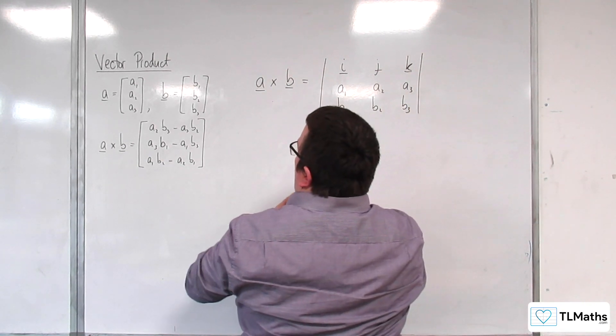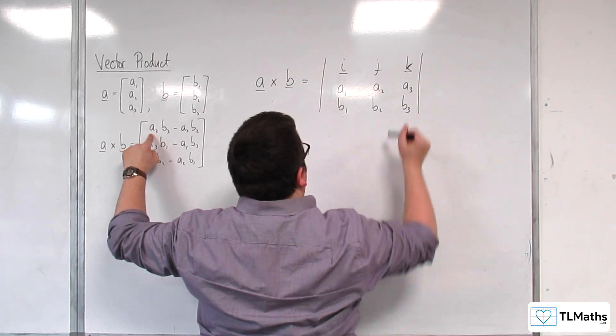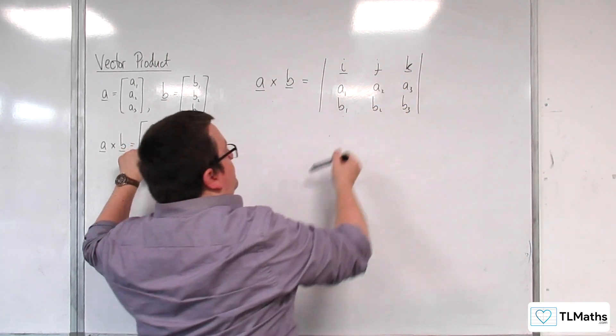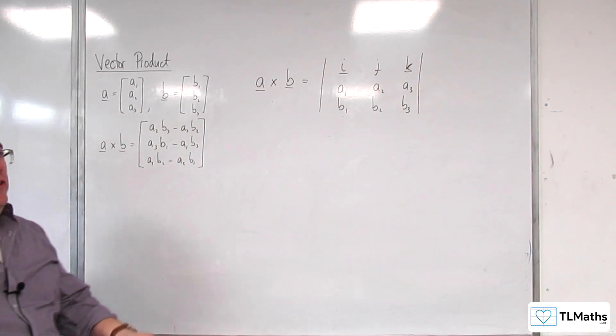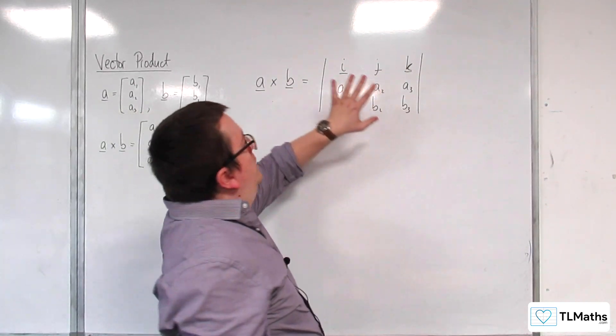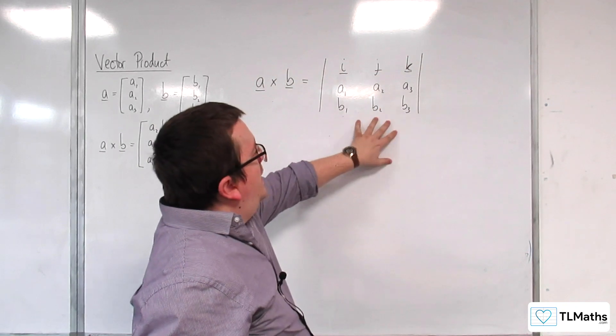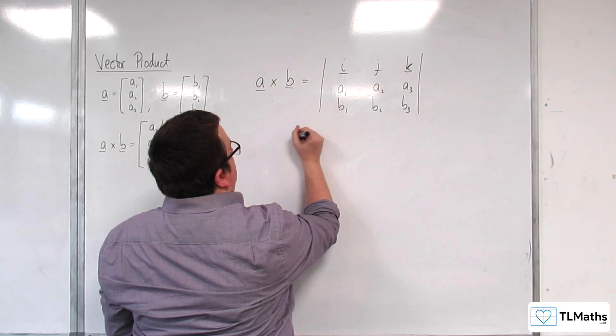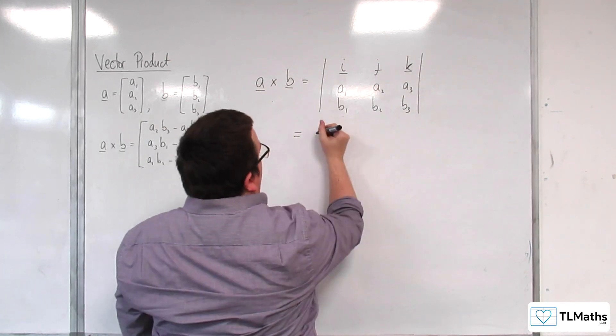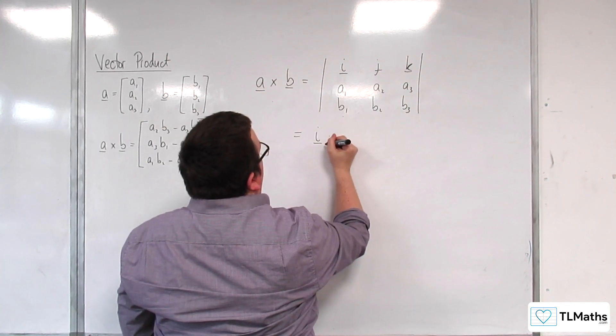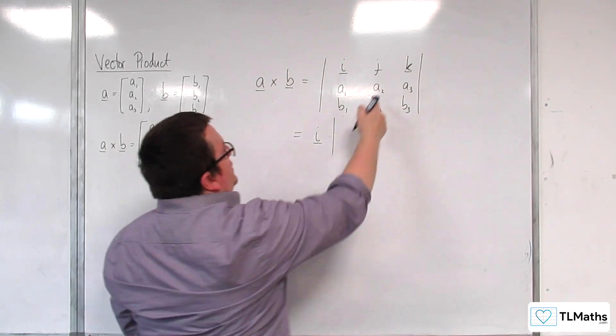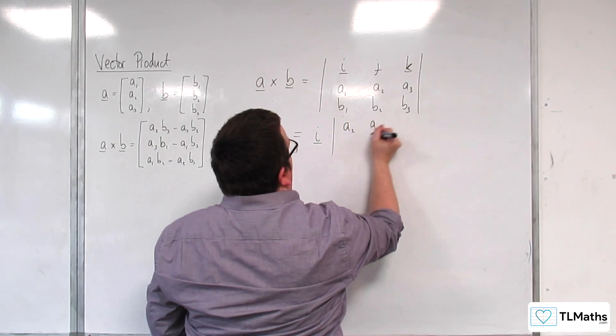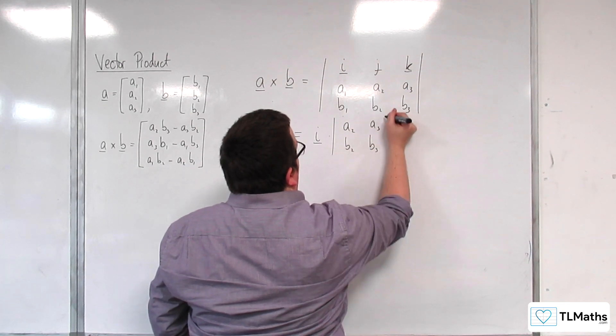then you can see that A2, B3, take away A3, B2, is that times that, take away that times that. So you can see that actually, what we've got here is the determinant of this 3x3 matrix. And we'll break it open even further. So, this is going to be equal to I times by the determinant of this matrix here, A2, A3, B2, B3.